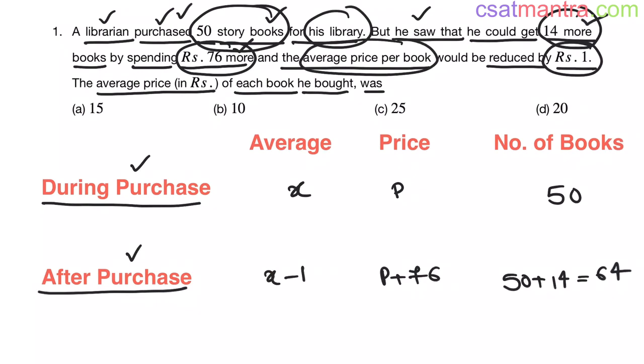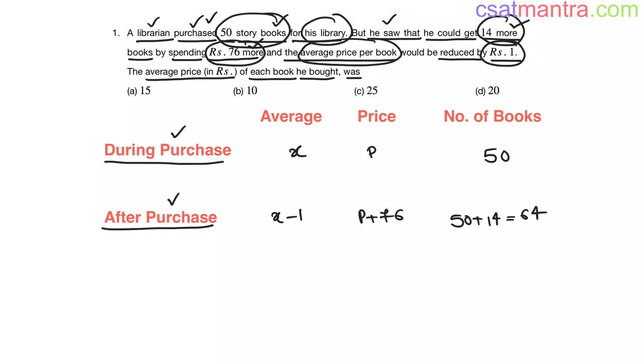This is clear, right? Now, equations part. We have identified all the information. Now, putting them in equations format. We know average is equal total sum. Total price by number of books. So, I am writing the equation for case 1. That is average X is equal total price P by number of books 50. That implies P is equal 50X.